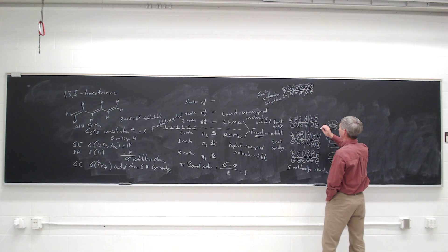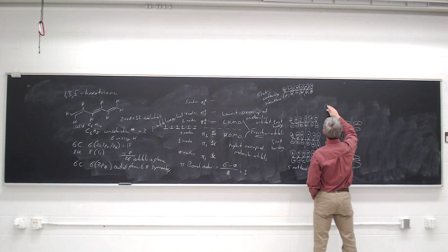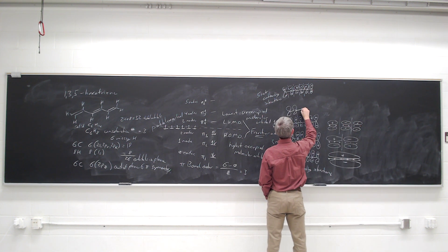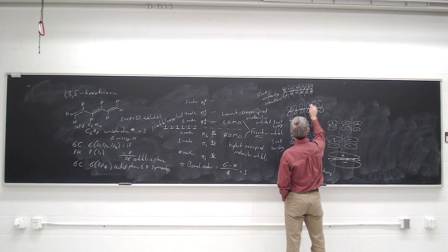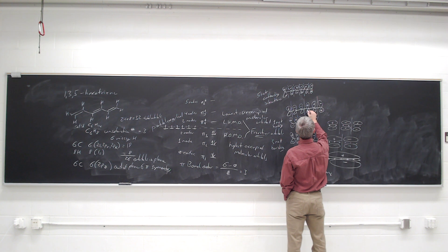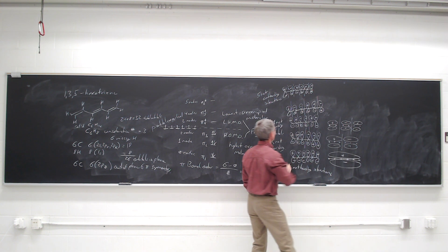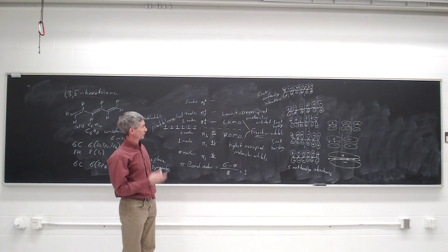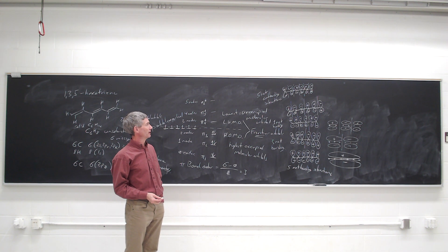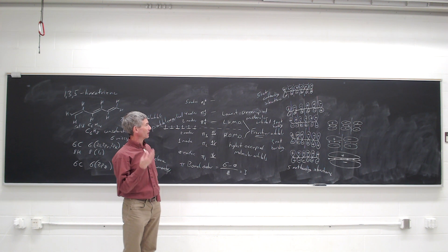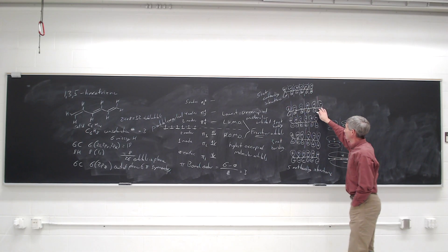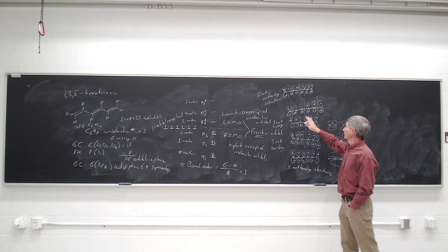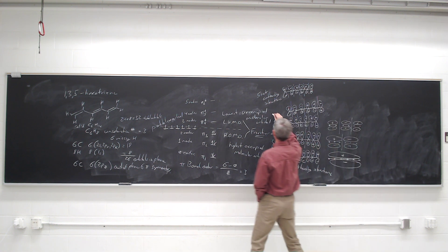Pi-4 needs to have three nodes — one down the center and also on the ends. It has bonding interactions with respect to carbons 2-3 and 4-5, but antibonding interactions with respect to carbons 1-2, 3-4, and 5-6. So it has three antibonding and two bonding interactions, giving one net antibonding interaction. Pi-4 is the lowest unoccupied molecular orbital.